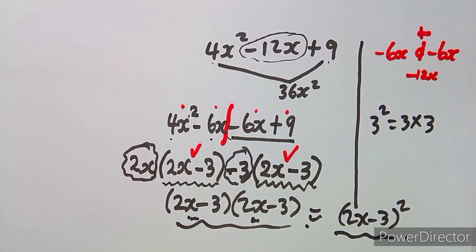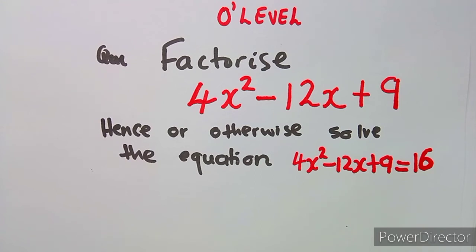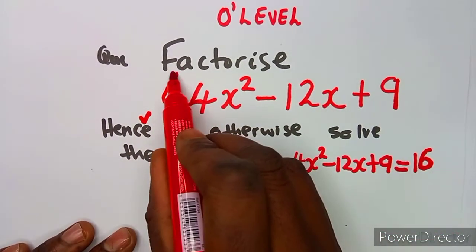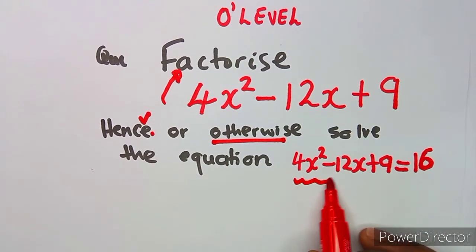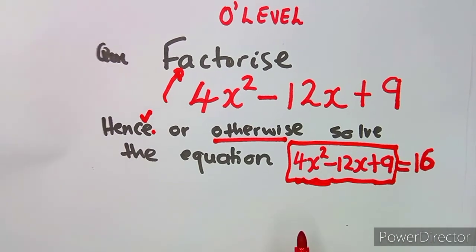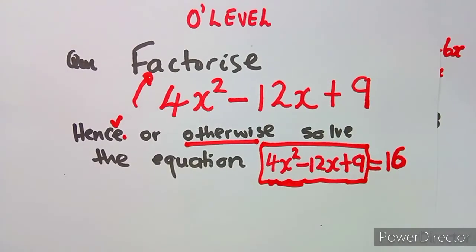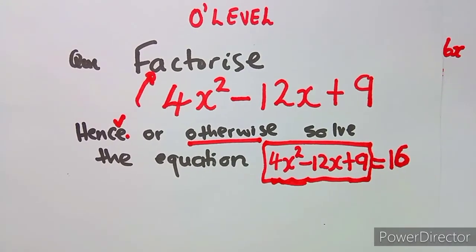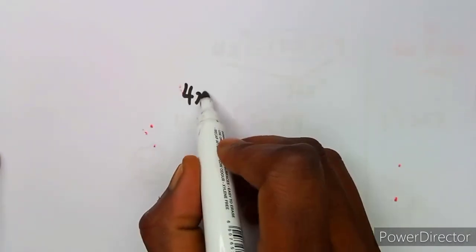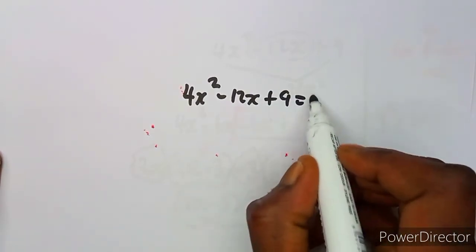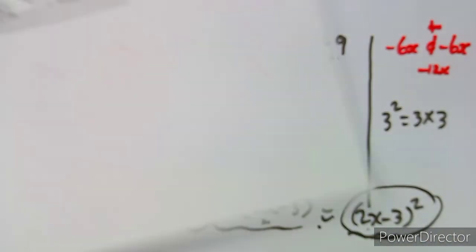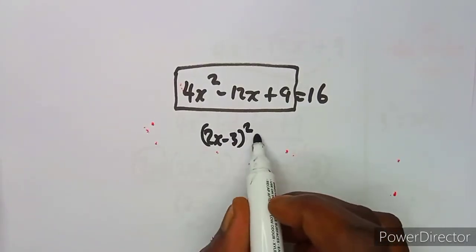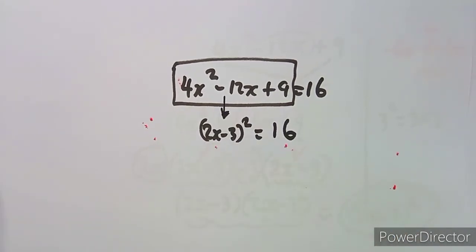The next part is 'hence or otherwise solve the equation.' Hence means continuation from what we just obtained; otherwise means you can use any other method. Using hence, the equation is 4x squared minus 12x plus 9 equals 16. Since we've already factorized the left side, we can write this as (2x minus 3) squared equals 16.